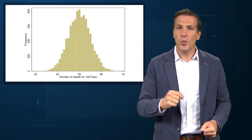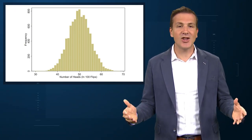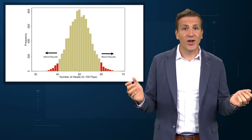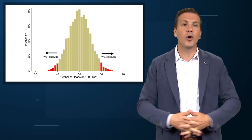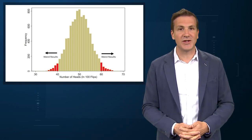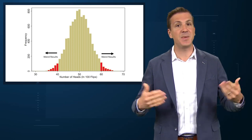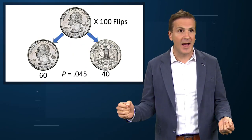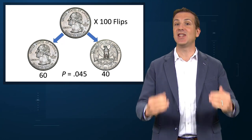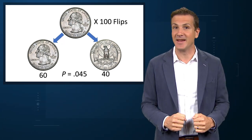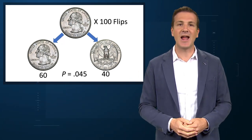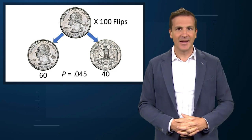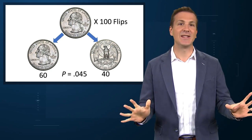So how weird are the 60 heads that I saw? Well, assuming the coin on the street was fair, I'd see a result as weird as the one I got about 4.5% of the time, or in p-value terms, .045. In other words, my results are statistically significant. By our conventional definition, I will be calling my local numismatist and making a complaint.